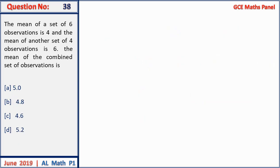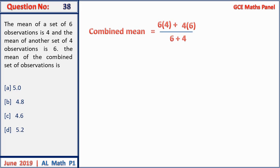Question 38: the mean of 6 observations is 4 and the mean of 4 observations is 6. The mean of the combined observations: total of first set = 6×4 = 24; total of second = 4×6 = 24; combined mean = 48/10 = 4.8. Many students mistakenly average the two means — you must use totals divided by total count. Answer B.